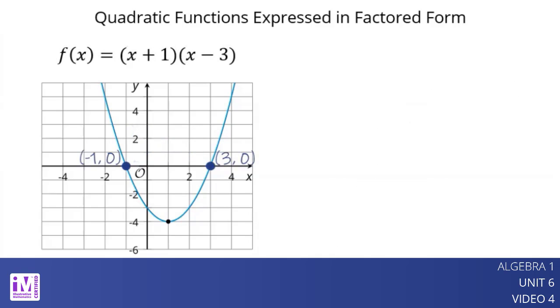The factored form can also help us identify the vertex of the graph, which is the point where the function reaches its minimum value. Because of the symmetry of quadratic graphs, the vertex is halfway between the zeros at negative 1 and 3.